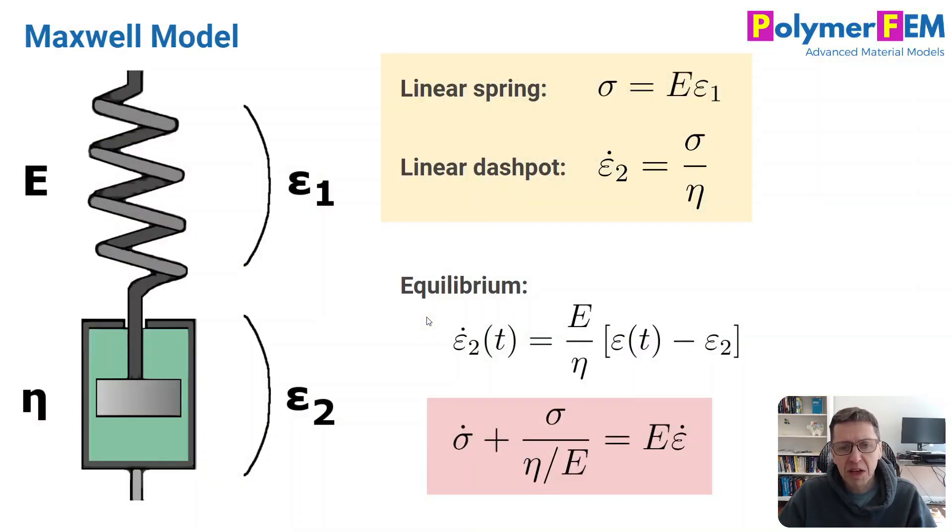So let's talk about the Maxwell model first. This is my way of introducing the similarity between the rheological model and the integral equation formulations from the previous slide. So in the Maxwell model, we have a linear spring and a linear dashpot. And the linear spring is a spring where the stress is proportional to the strain. And a linear dashpot is a dashpot where the flow rate, the strain rate, is proportional to the stress.